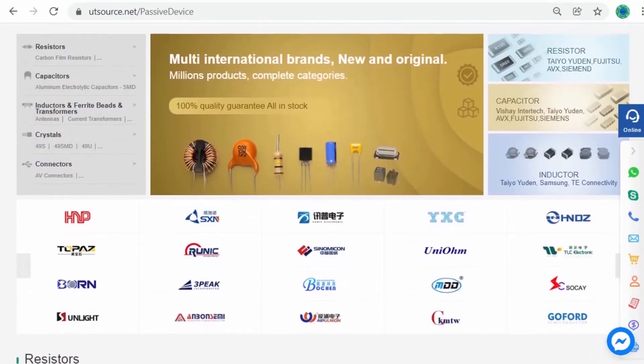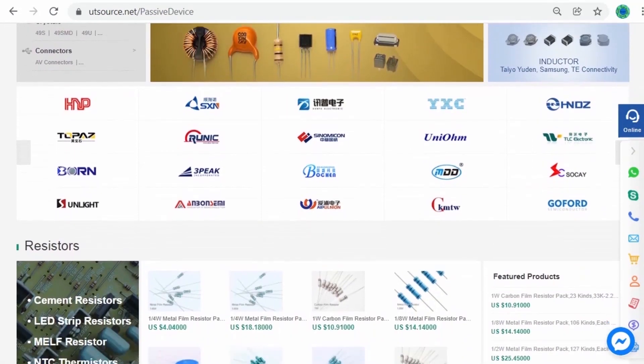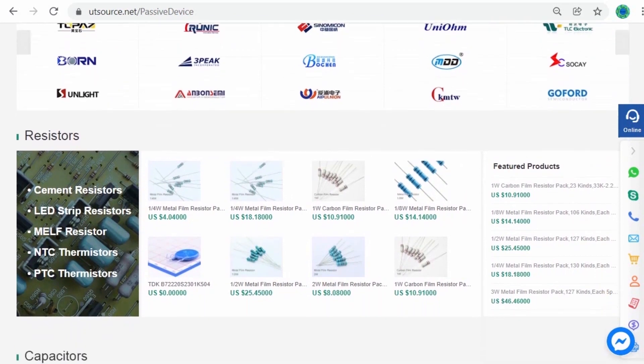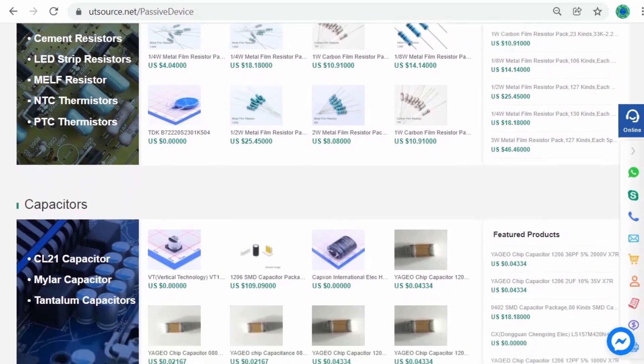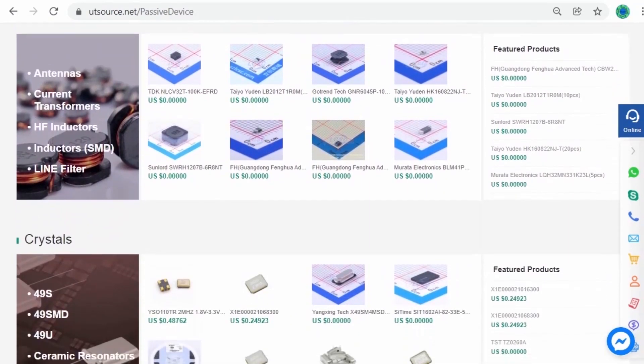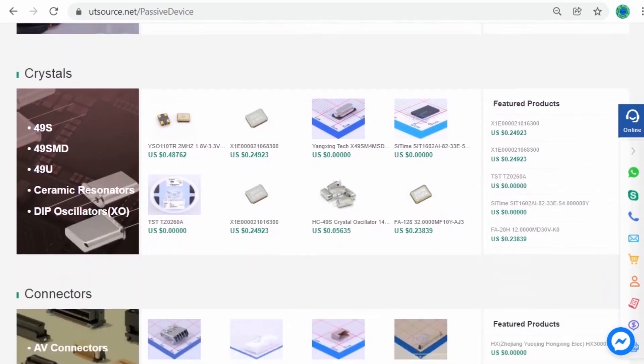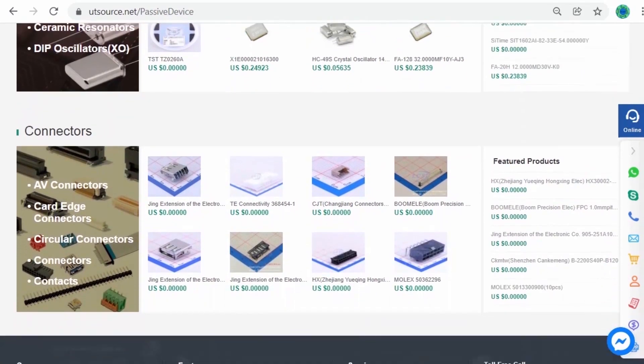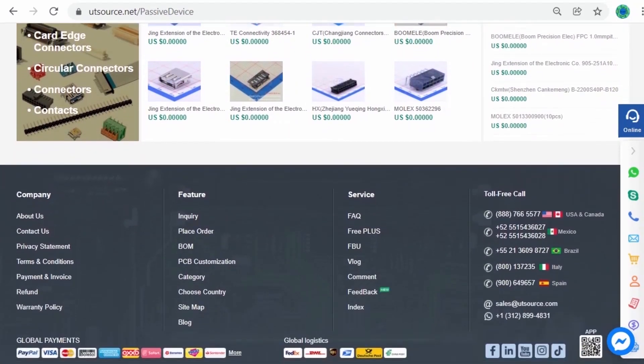as IC chips, capacitors, transistors, resistors, LEDs, diodes, sensors, and electrical and electronic tools. UTSource.net is the most complete and professional electronic component mall. If you want to visit UTSource.net and buy electronic components, the link is in the description.